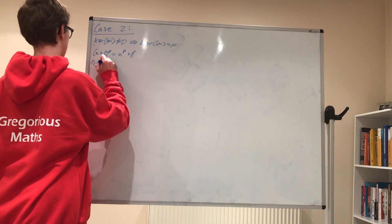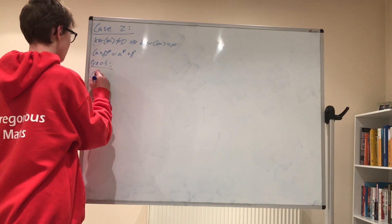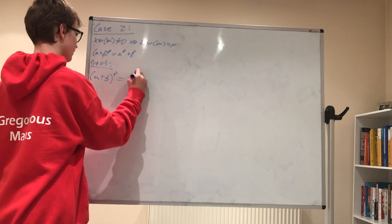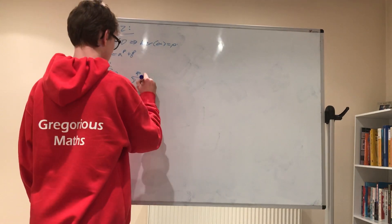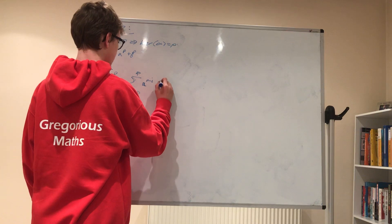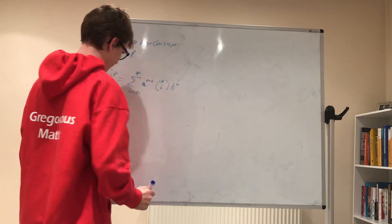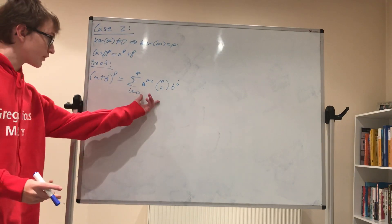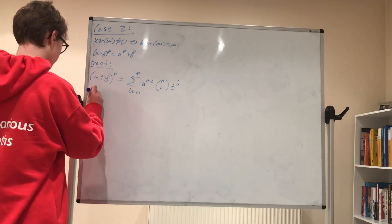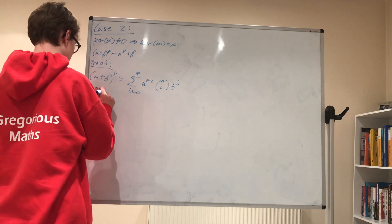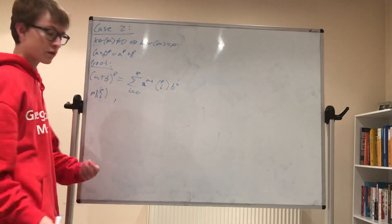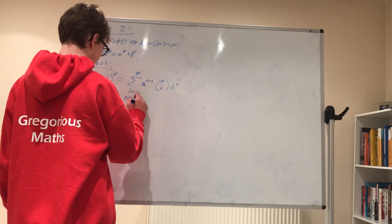And this is because a plus b to the p is equal to the sum from i equals zero to p of a to the p minus i times p choose i times b to the i. And so the point is that p divides p choose i whenever zero is less than i is less than p.